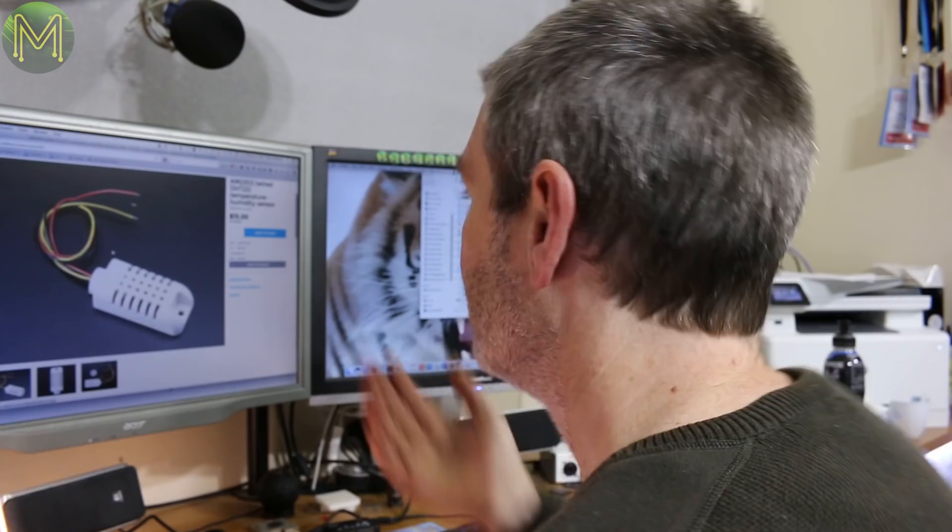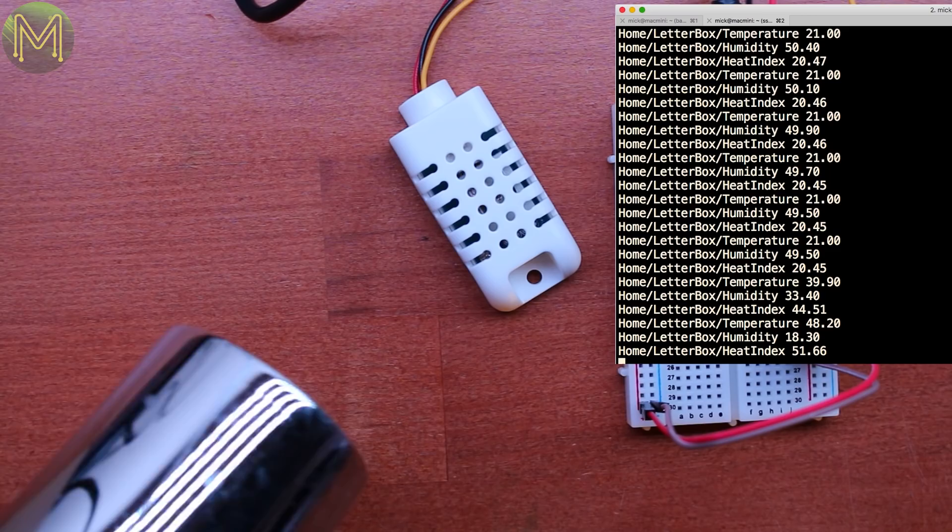So, plugging it in, and updating my code once again. I got it publishing temperature, humidity, and calculated heat index events to the MQTT network. Easy.